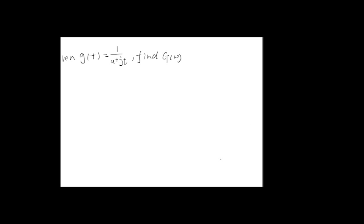For part b, if we are given g(t) equals 1 over (a plus j·t), and we are asked to find G(omega), we examine this function carefully and compare it with the result of part a — specifically G(omega) equals 1 over (a plus j·omega) — and we see that this new function looks very similar.